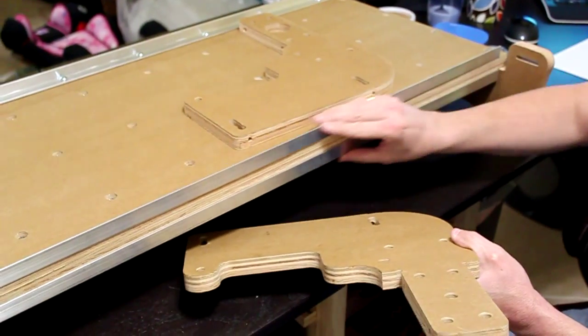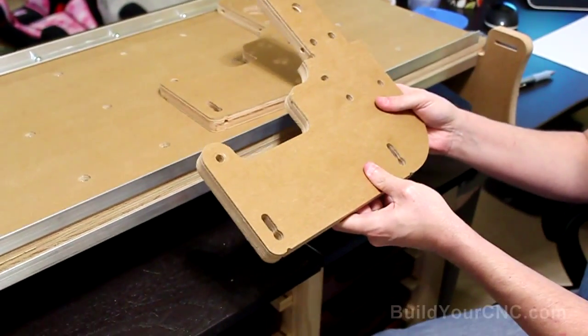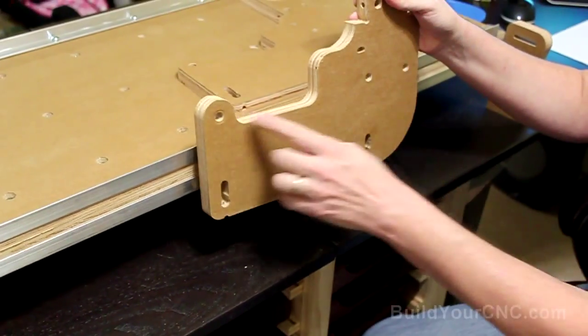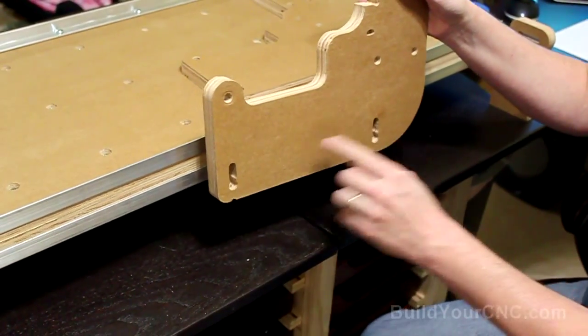Okay, so we have the rails. We can go ahead and put on the gantry side. On this side we'll have these holes. There's three holes in the top and two holes in the bottom.